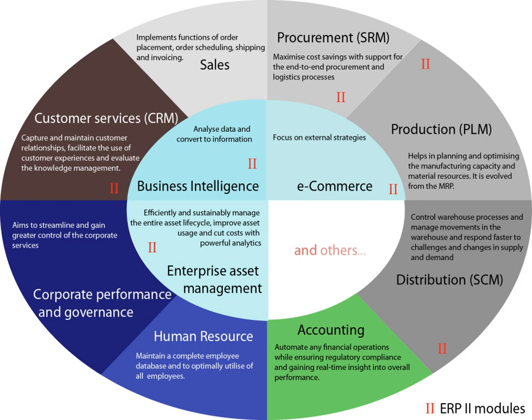Supplier Relationship Management became integrated later, when the Internet simplified communicating with external parties. The term ERP 2 was coined in 2000 in an article by Gartner Publications entitled 'ERP is Dead, Long Live ERP 2.' It describes web-based software that provides real-time access to ERP systems to employees and partners, such as suppliers and customers. The ERP 2 role expands traditional ERP resource optimization and transaction processing. Rather than just manage buying, selling, etc., ERP 2 leverages information in the resources under its management to help the enterprise collaborate with other enterprises.